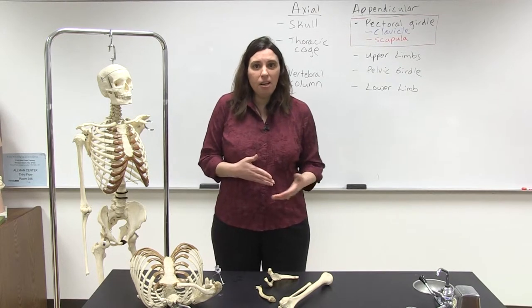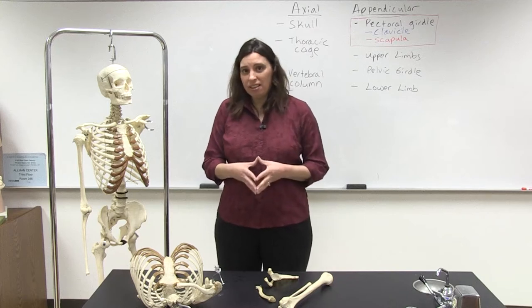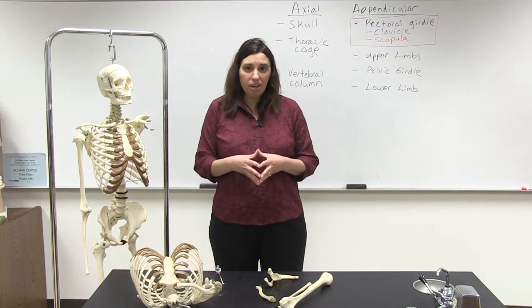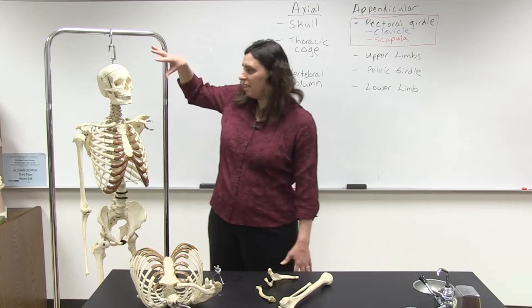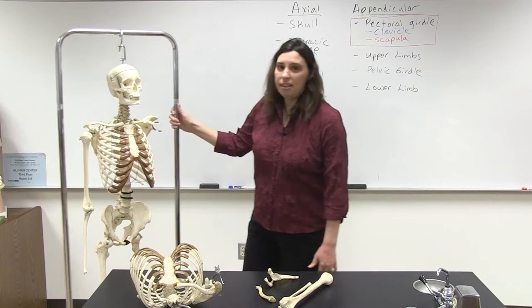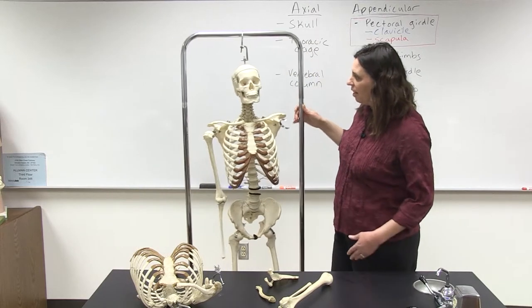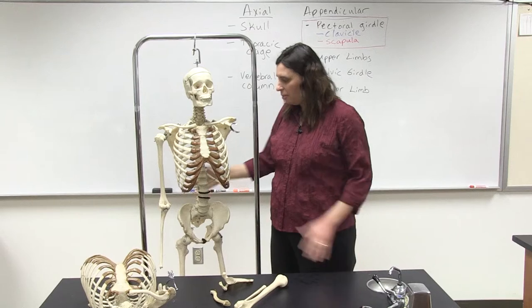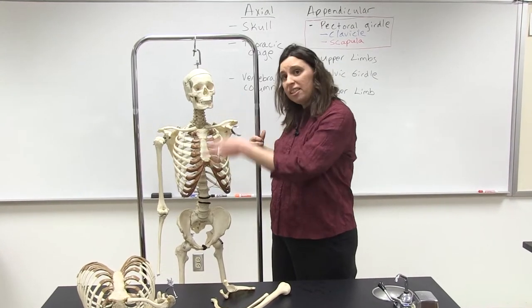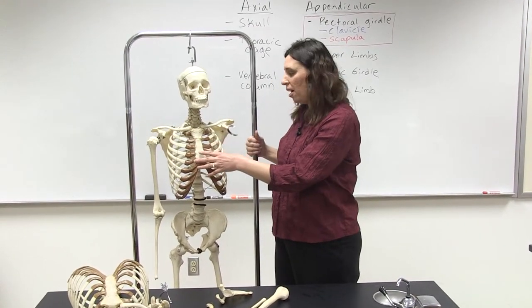You probably have already learned about the axial skeletal system, so just to put the appendicular in its appropriate context, the axial skeletal system, as you can see from the skeleton, consists of the skull, the vertebral column, and the thoracic cage. Essentially it's in the center part of the body.